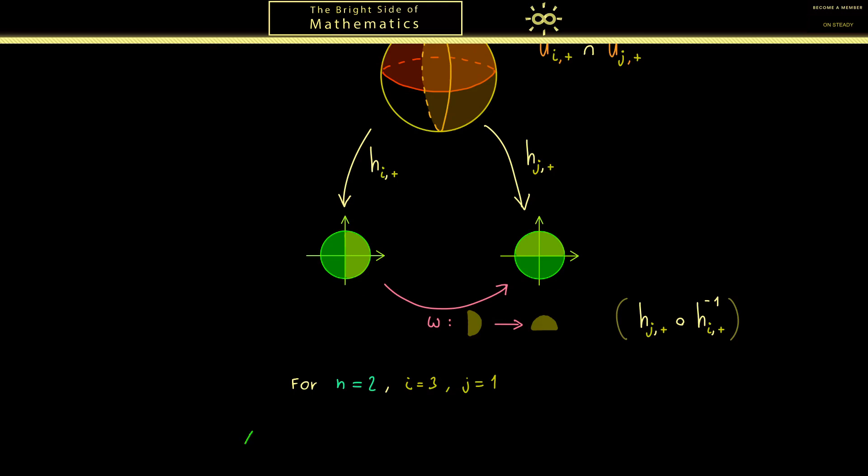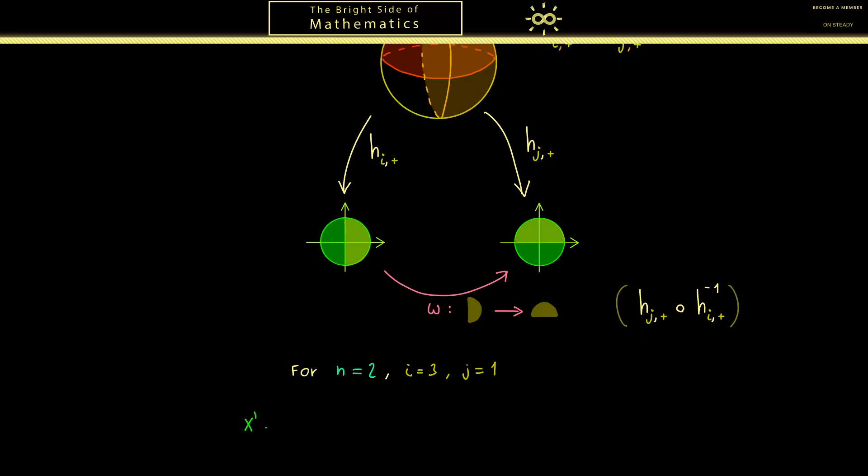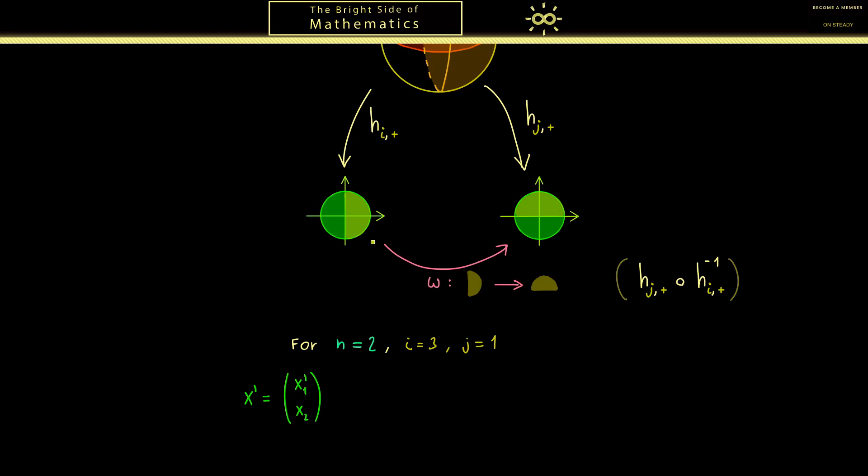First we start with a two-dimensional vector. Let's call it x'. So this is an element here on the left-hand side, and in our case it has 2 components: x_1' and x_2'. Now we apply the first map here, which means we go back to our S^3. In other words, now we have a vector with 3 components. And now you should know from the other parts that we can form this additional component with a square root. More precisely, it's the square root of 1 minus the Euclidean norm of x' squared.